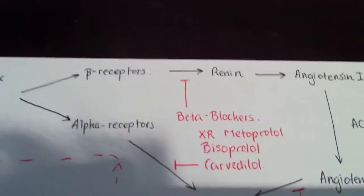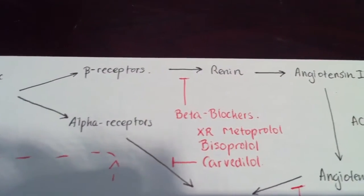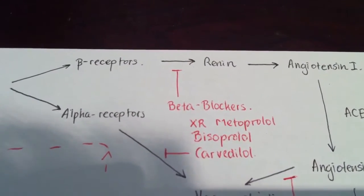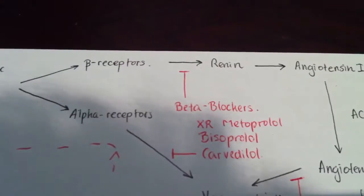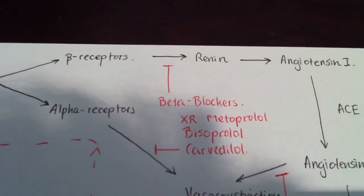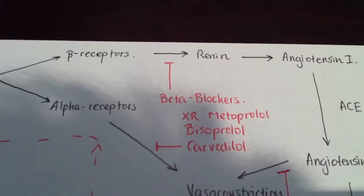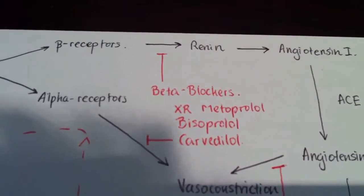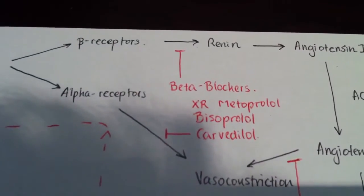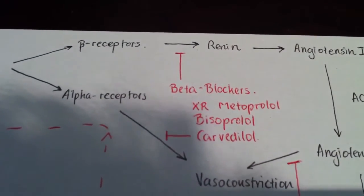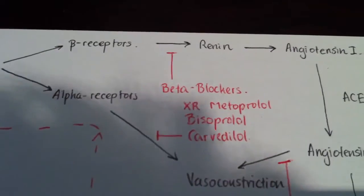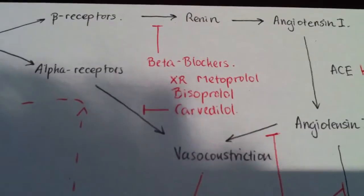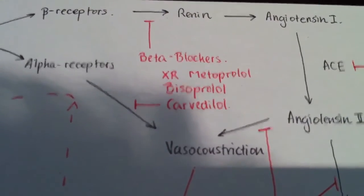Let's start from the beta receptors. As catecholamines bind to beta receptors to cause the release of renin, we can use beta blockers such as extended-release metoprolol, bisoprolol, and carvedilol to stop that. With carvedilol, it also has an alpha antagonistic effect, so it also binds to alpha receptors causing less vasoconstriction, thus less resistance and less stress for the heart.